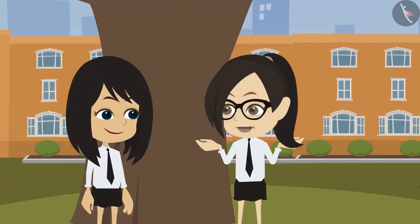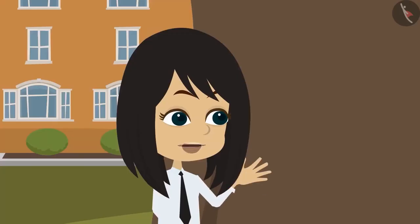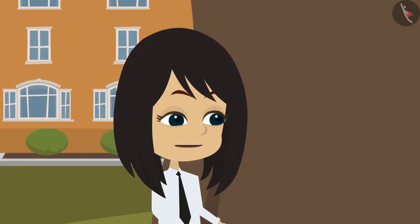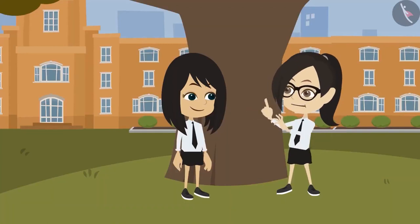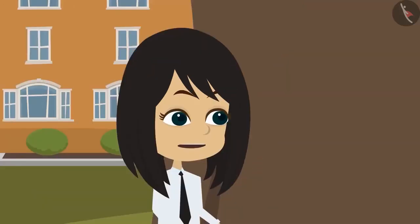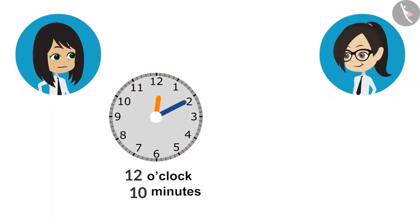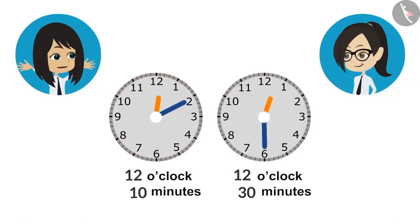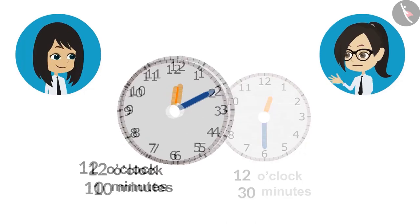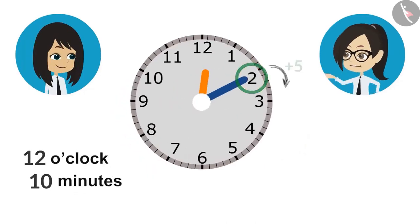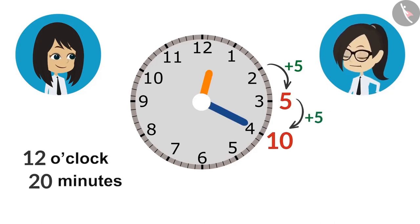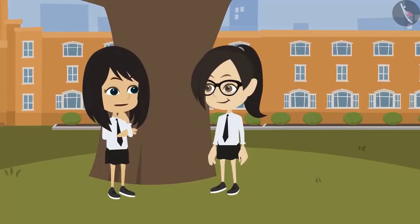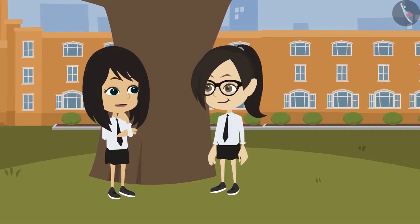Let us ask questions related to these 3 points. First, let's find how long our lunch break is. Our lunch break starts at 10 minutes past 12 o'clock and ends at 30 minutes past 12 o'clock. The minute hand is at 2 at the start. From 2 to 3 is 5 minutes, till 4 is 10, then 15, 20. This means our lunch break is 20 minutes long.